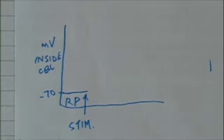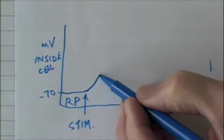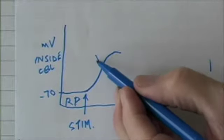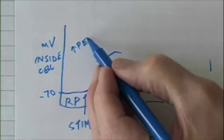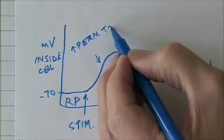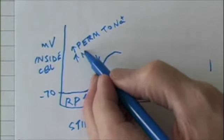But if you increase the permeability of sodium, excess sodium begins to move into the cell. And this resting potential begins to rise. So this is due to increased permeability to sodium and increased sodium moving into the cell.